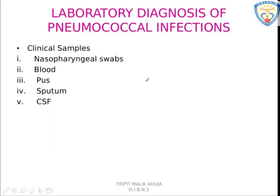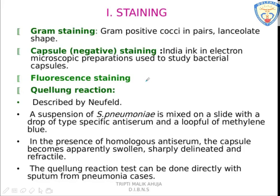For diagnosis of pneumococcal infection, clinical samples can include nasopharyngeal swabs when looking for carriers, as well as blood, pus, sputum, and cerebrospinal fluid collected from the patient. The first approach is staining. In Gram staining, if gram-positive cocci in lancet appearance appear, that indicates pneumococcus. Capsule staining can be done by the negative staining method using India ink, and electron microscopic preparations are carried out to study the capsule.